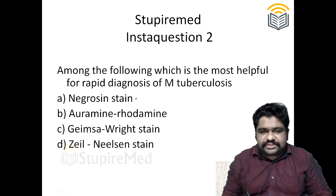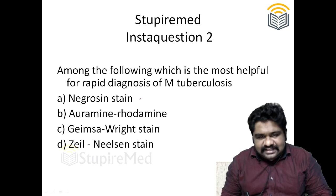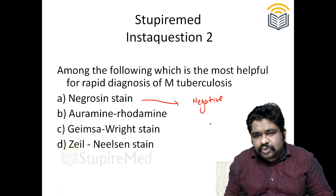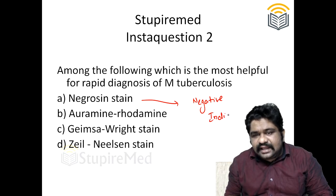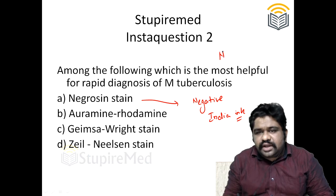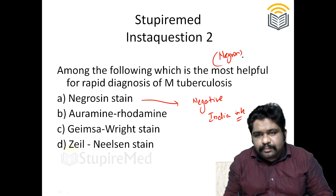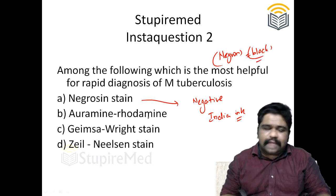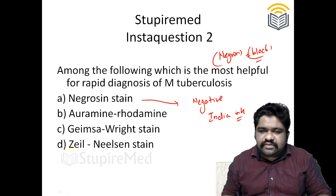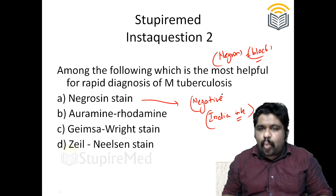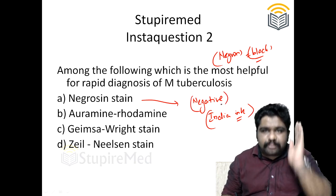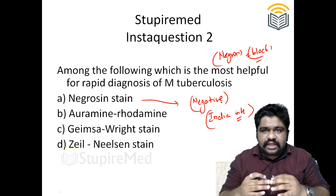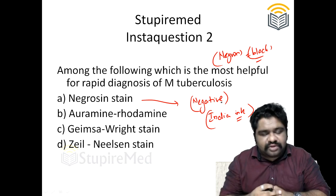Let's begin with the first option. Nigrosin stain is important as a negative stain and is also referred to as India ink preparation. The word 'nigrosin' stands for black. Remember, it gives a black background and produces negative staining — meaning the structure to be demonstrated is not stained, while the background is stained, so the organism appears brighter against the background.